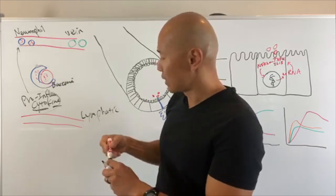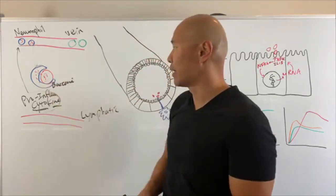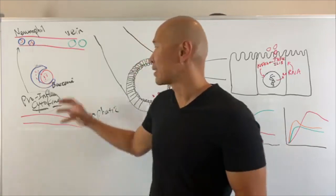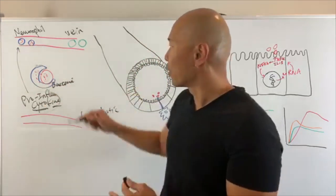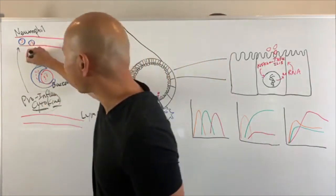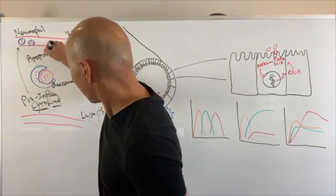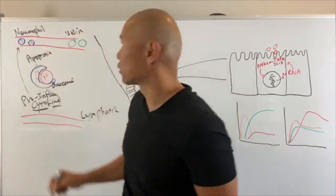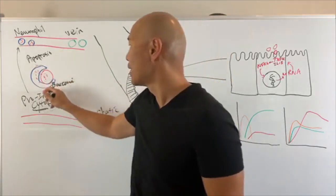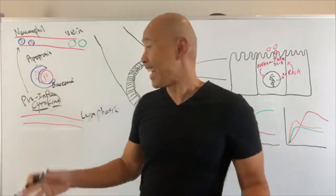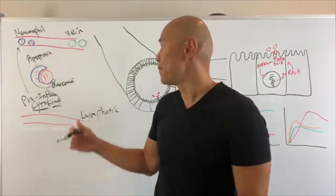Now once these neutrophils kill the bacteria, they go through what's called apoptosis — programmed cell death. That means this cell is going to self-destruct. It's killed the bad guy, now it's going to self-destruct.